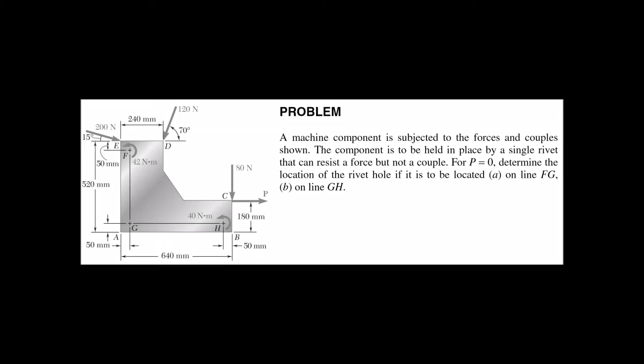Here's another equivalent force system. A machine component is subjected to the forces and couples shown. The component is to be held in place by a single rivet that can resist a force but not a couple. For P equals 0, determine the location of the rivet hole if it is located somewhere on line FG or somewhere on line GH. So we're going to take a single rivet and stop all translational and rotational motion by finding the equivalent resultant force and the equivalent resultant moments to place that force in just the right spot.